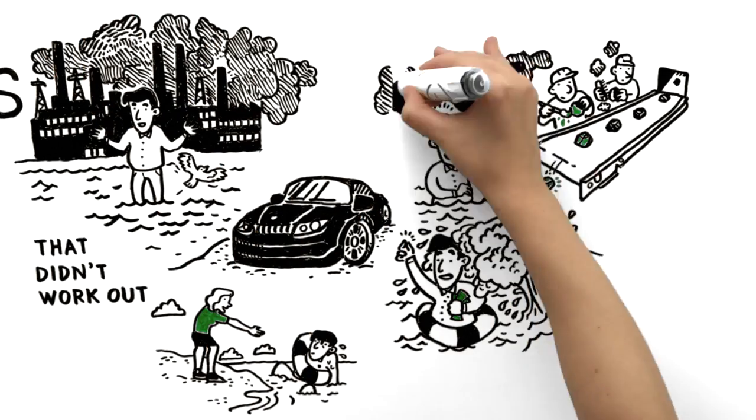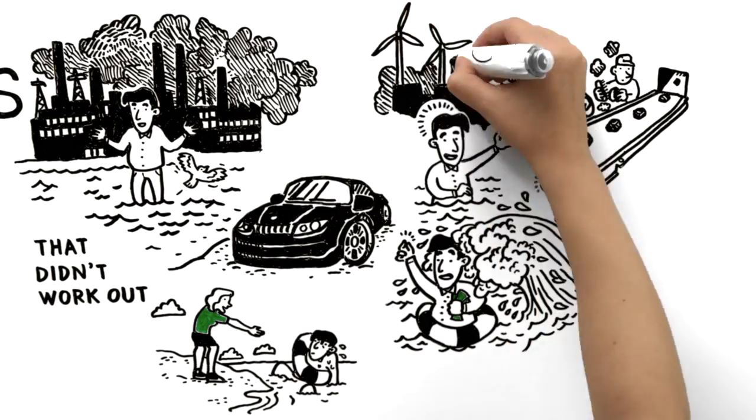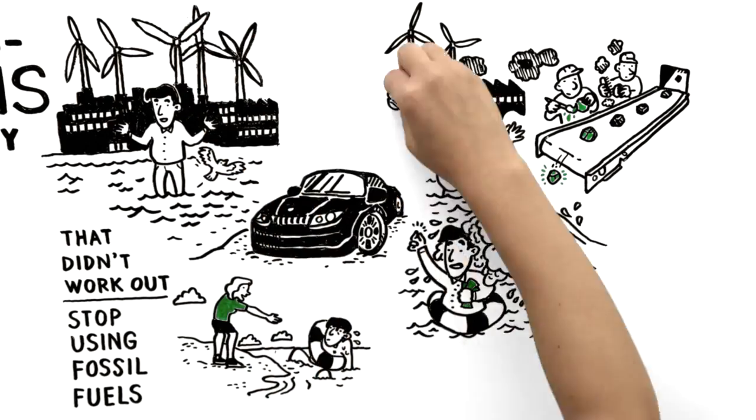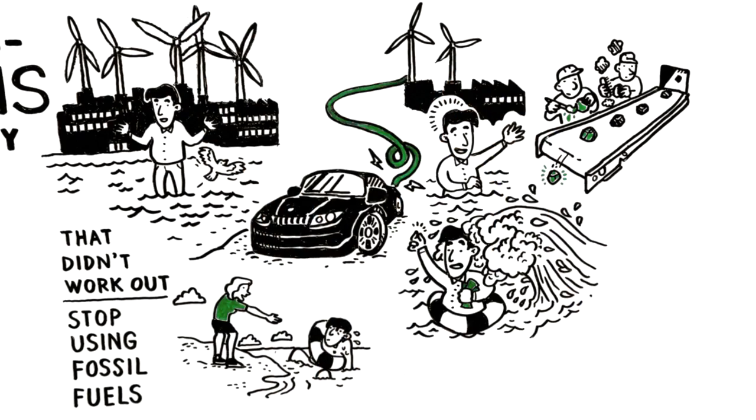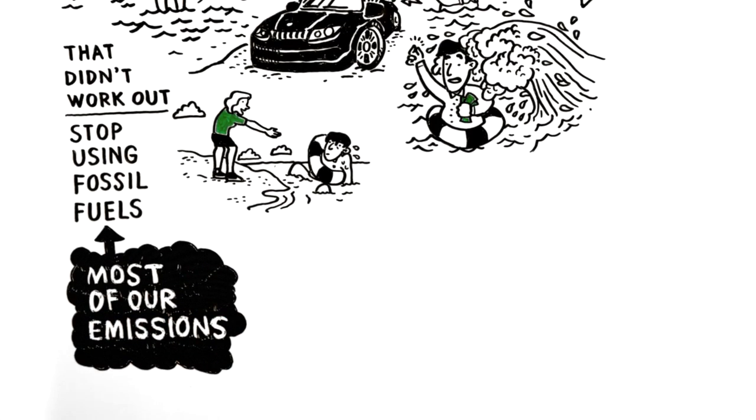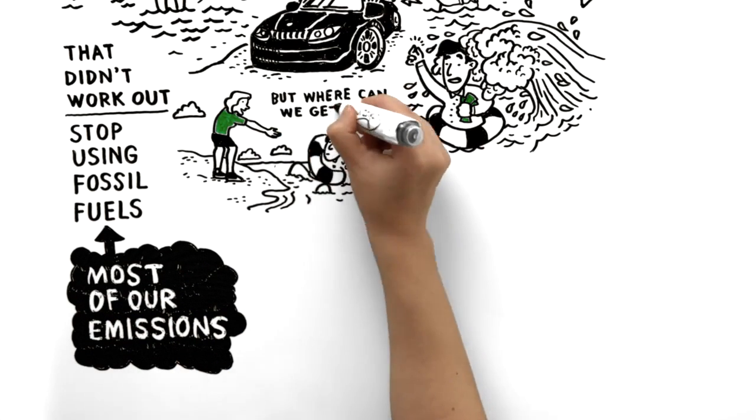The recipe for preventing climate chaos is simple. We must stop using fossil fuels, such as coal for power or oil for transportation. This is where most of our emissions come from. But where can we get the energy, then?